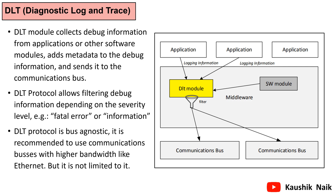But DLT does not limit itself to the Ethernet bus. The user has the option to choose any other communication bus. Another advantage of DLT is that it has log information filtering depending on the severity of the log information. For example, if a log captured is just information, it can be of low severity level. And if the log is of a fatal error, it can be of a higher severity and filtered accordingly.